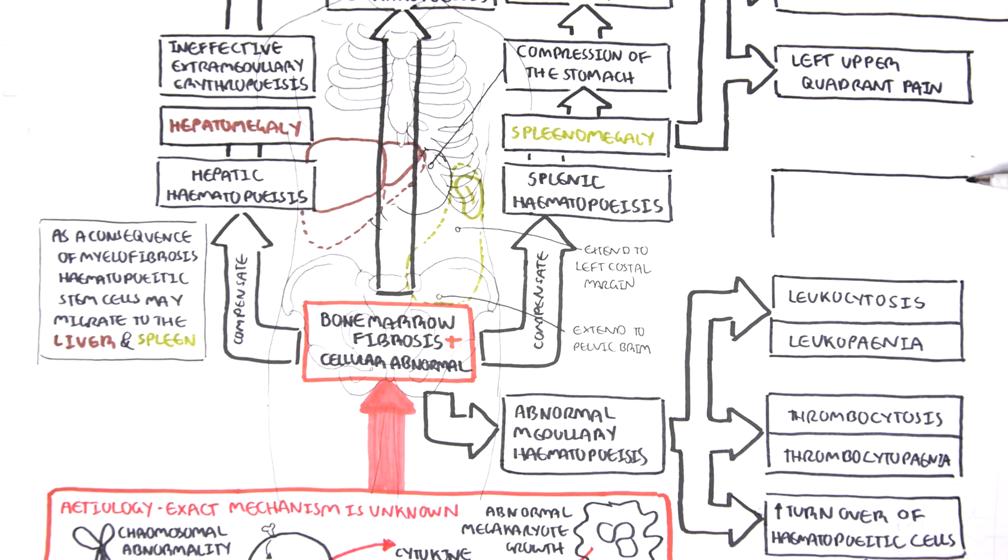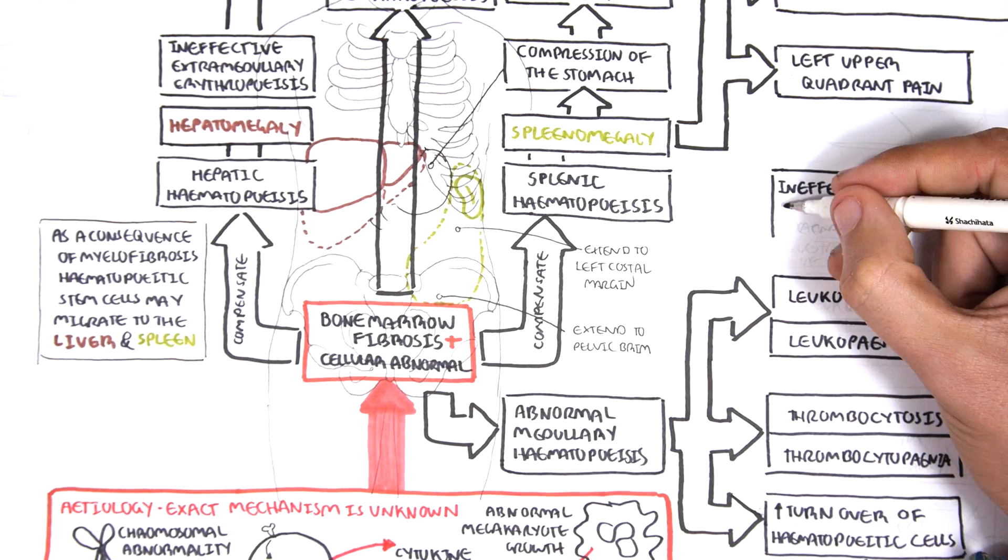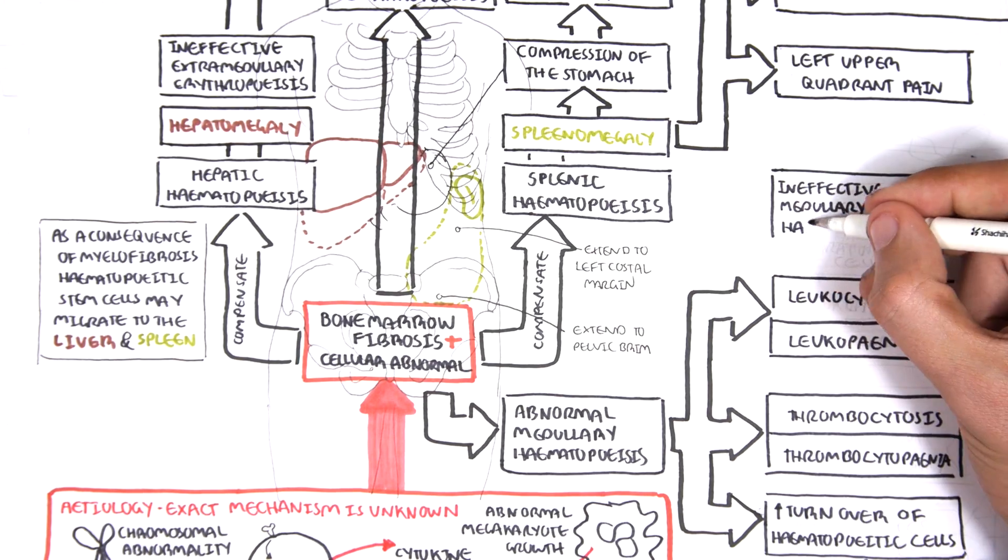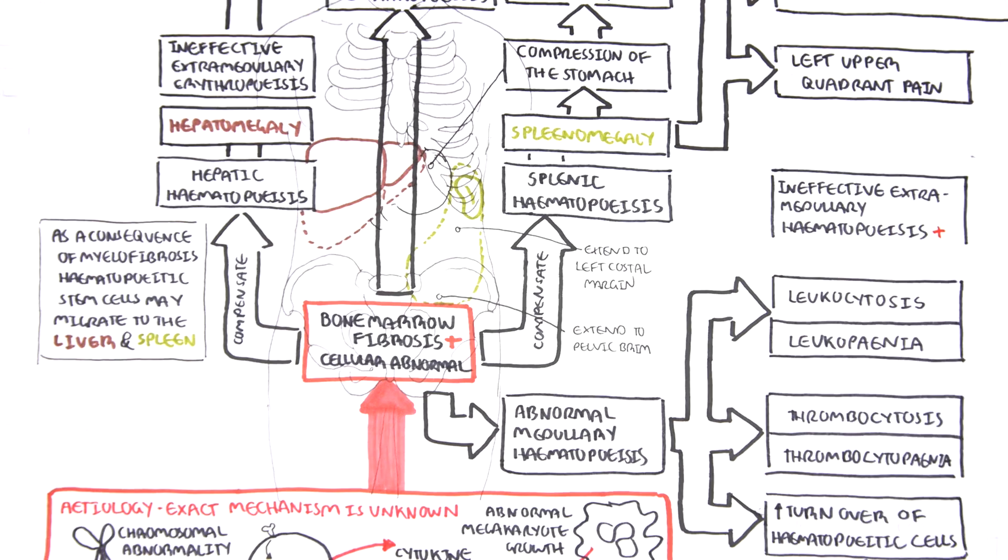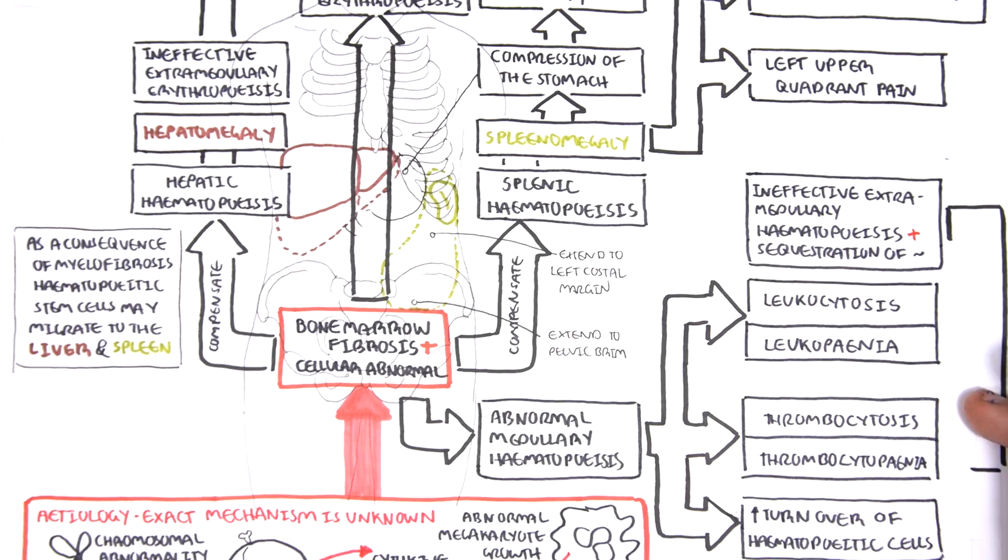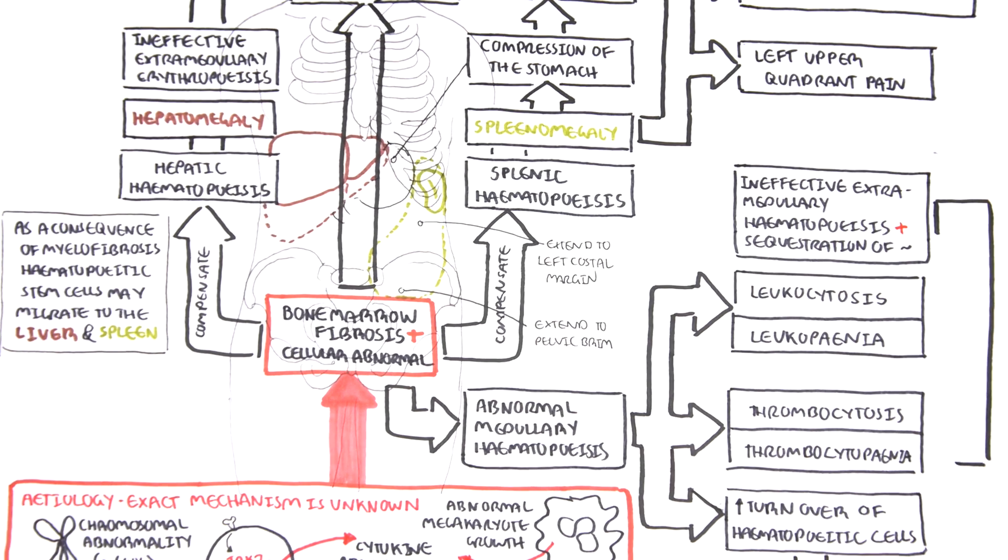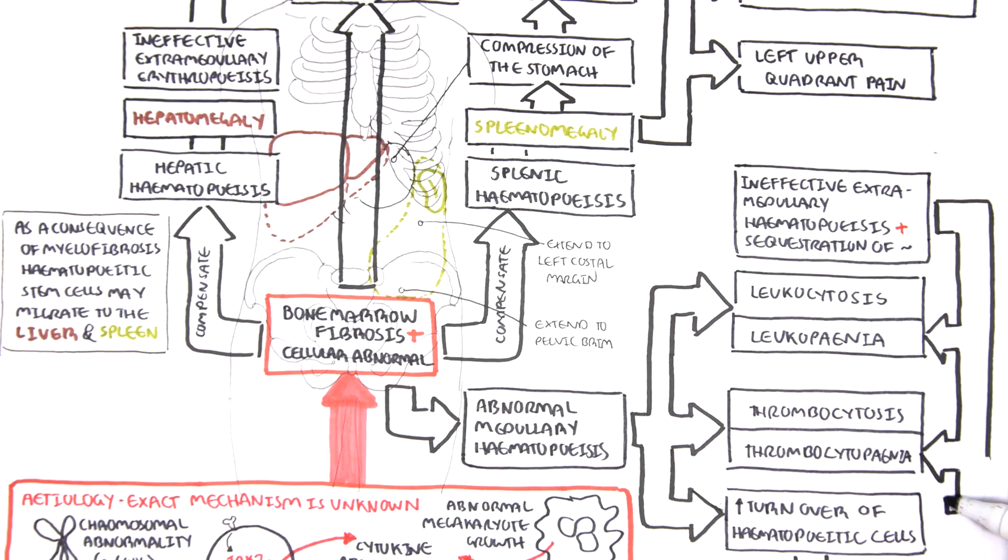The ineffective extramedullary hematopoiesis together with the sequestration of red blood cells, white blood cells, and platelets in the spleen contribute to splenomegaly, but also lead to leukopenia, thrombocytopenia, and an increase in overall cell turnover, leading again to an increase in metabolites such as lactate dehydrogenase and uric acid.